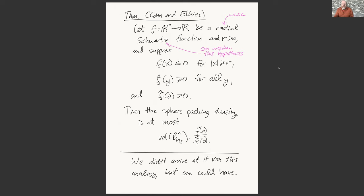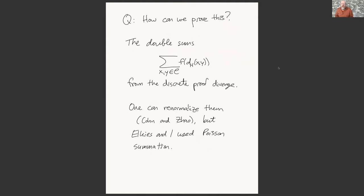A key question is how on earth can you prove something like this? The statement may be completely analogous, but the proof requires modification. In the discrete proof, we had a lot of double sums over all pairs of points. The problem is that double sums in the Euclidean case all diverge — you can formally write down the same manipulations and arrive at the same result, but they're totally divergent. One way of getting around this is to carefully re-normalize everything — Yufei Zhao and I worked out a proof along these lines — but what Noam and I did was to use Poisson summation.